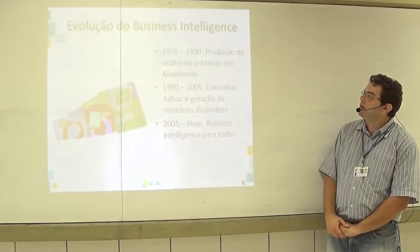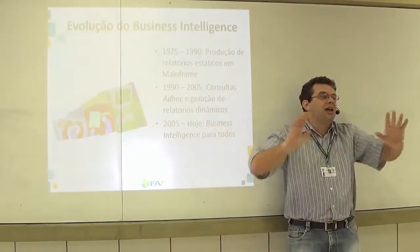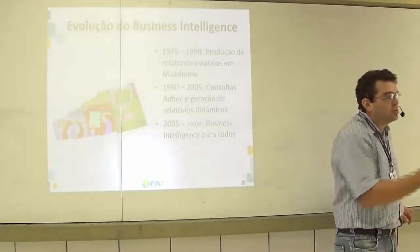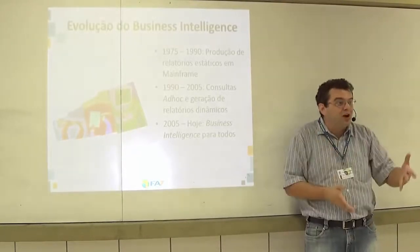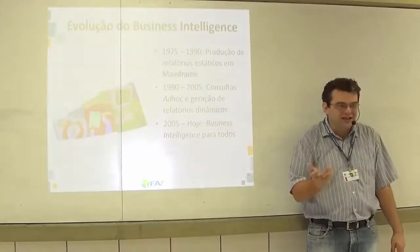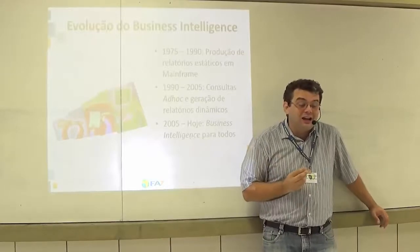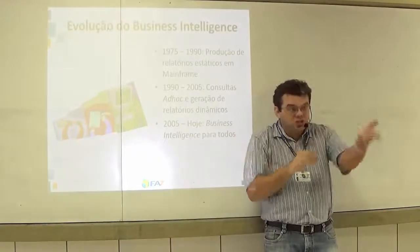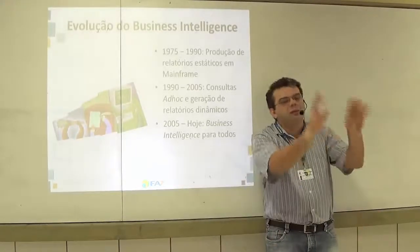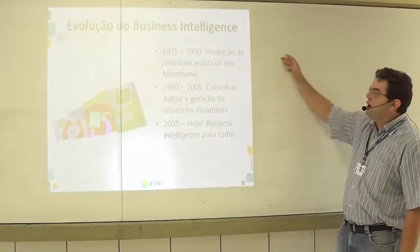Em 1975 até o início dos anos 90, informação era basicamente geração de relatório — você imprimia relatórios simples, como vendas ordenadas por funcionário ou filiais mais lucrativas. Era uma novidade na época. Naquela época os bancos de dados eram embutidos nas aplicações, em COBOL por exemplo, o que acarretava muitos problemas. A partir dos anos 90, surgiram sistemas mais inteligentes.